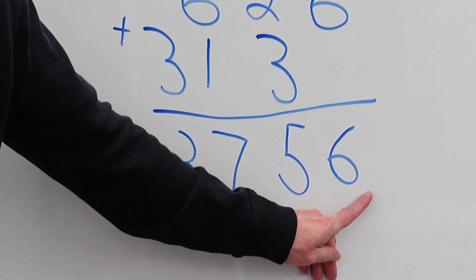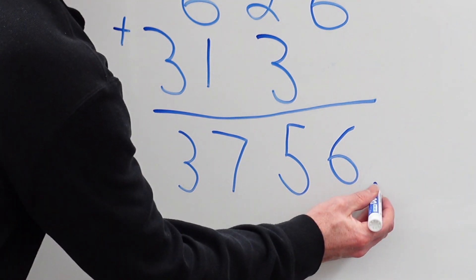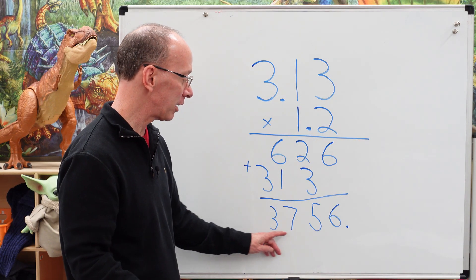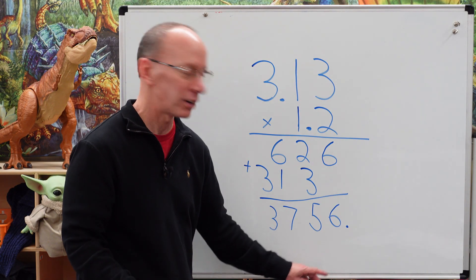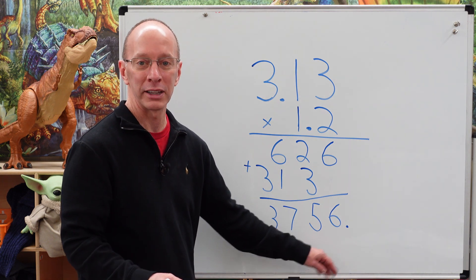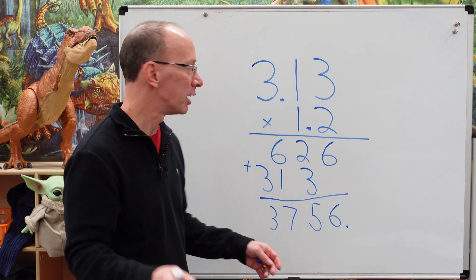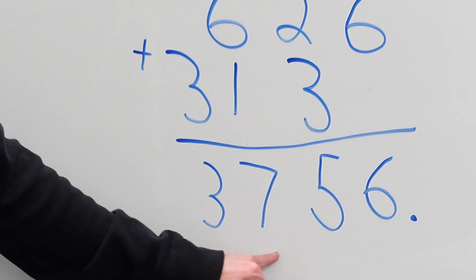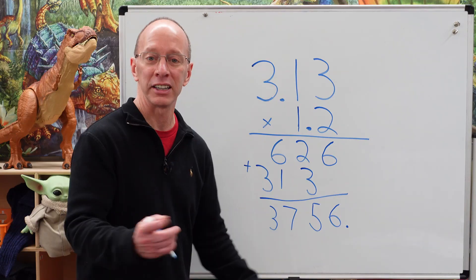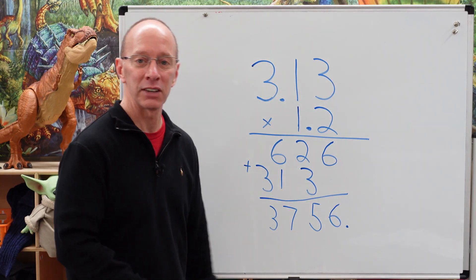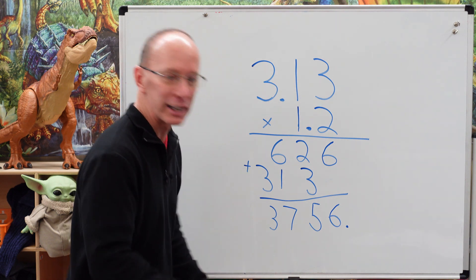there is an invisible decimal point right here. Okay. The same value. 3,756. Doesn't change the value. It's invisible. We just don't put that there. You know, when we're writing down a number. So we wouldn't say we want 3,756 point cookies. No, we just want 3,756 cookies. It's like, no,